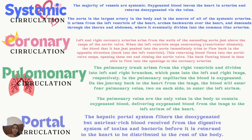This next slide is an exercise — pause the video and read through the definitions for systemic, pulmonary, coronary, and portal circulation and put them in your own words. If you don't understand, Google it. Make sure you understand these different circulatory pathways, one of which is fetal circulation.